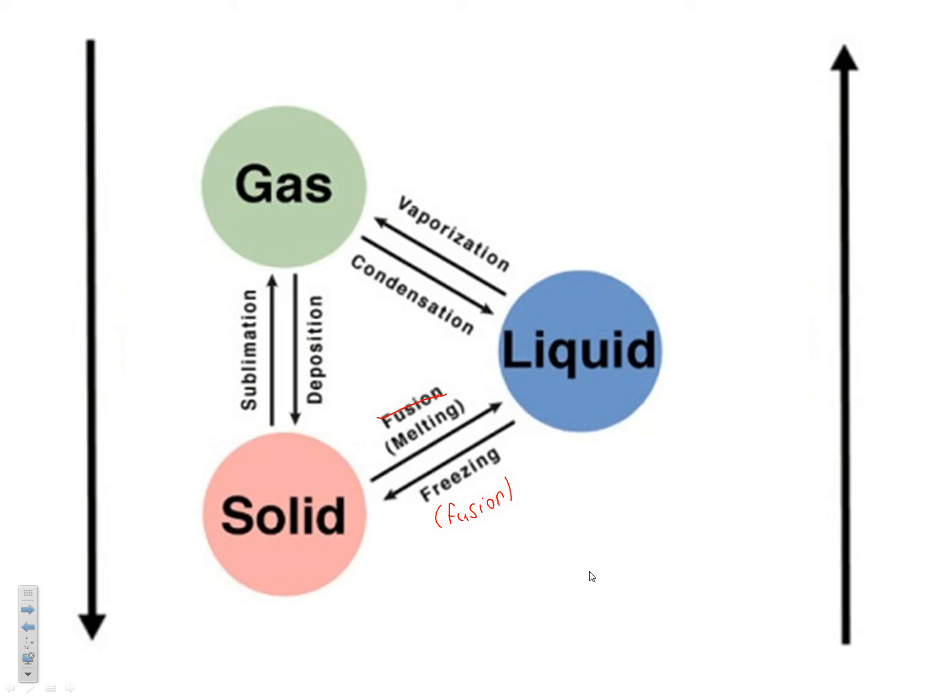Sublimation is when we go from a solid to a gas. The most common example is dry ice. When you add heat to dry ice, it becomes carbon dioxide gas directly — without entering the liquid phase. That's why we call it dry ice: because it doesn't get wet, it doesn't have a liquid form. It just sublimes, going directly from a solid to a gas.